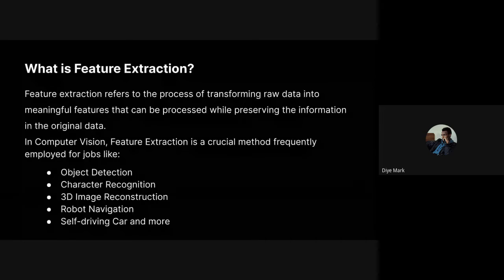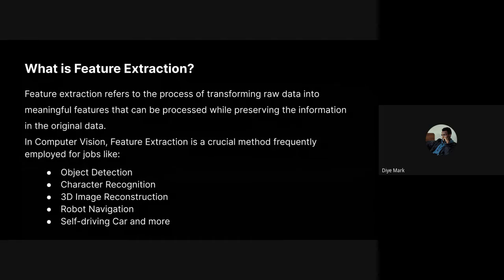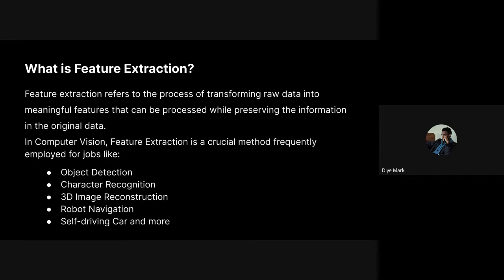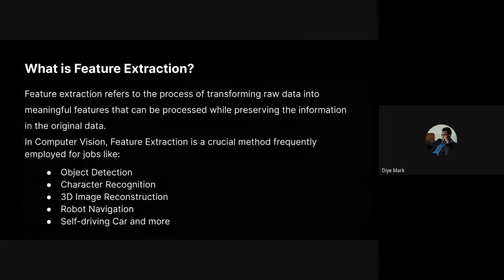In computer vision, feature extraction plays a big role. We use it in object detection, optical character recognition (OCR), and 3D image reconstruction — where multiple images are coupled to form a 3D representation of a space. Feature extraction is also used in robot navigation and self-driving cars. These are just a few technologies that rely on it.